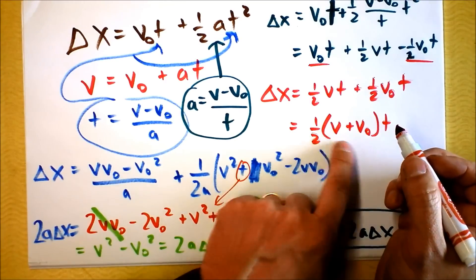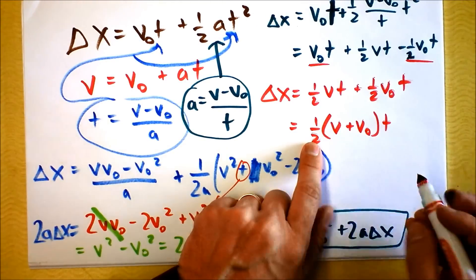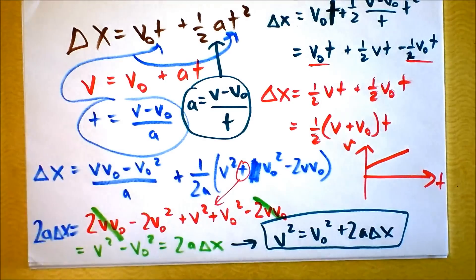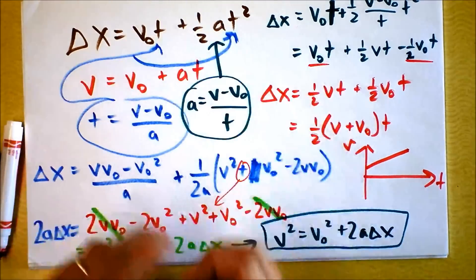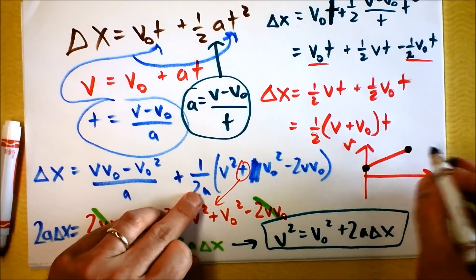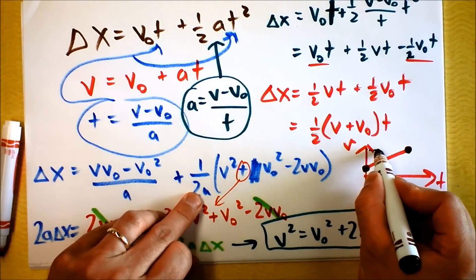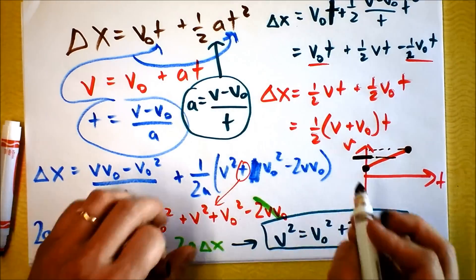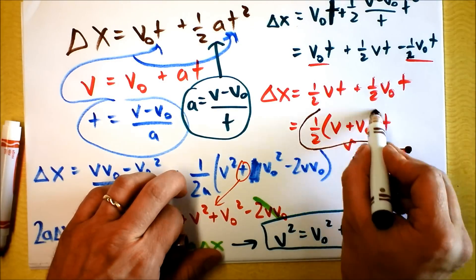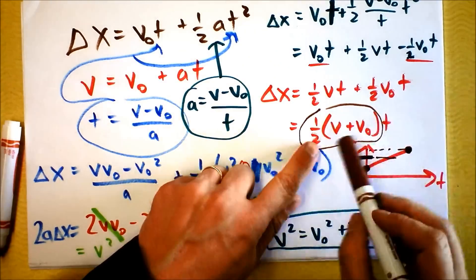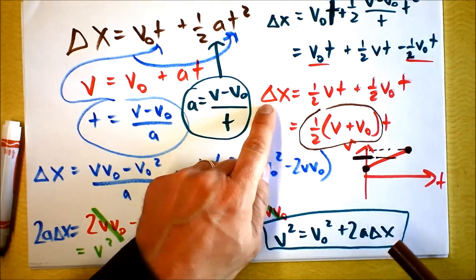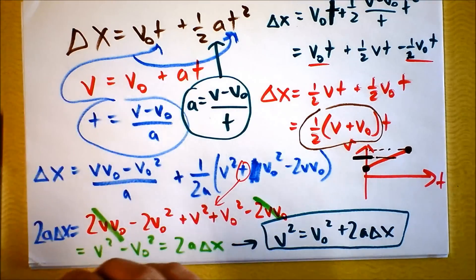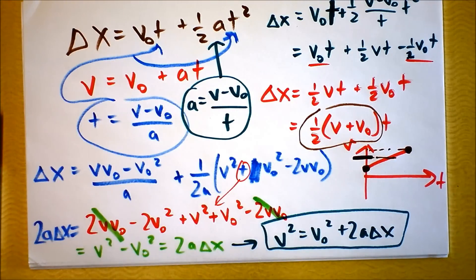This (v plus v-naught) divided by two is actually the average velocity. If I graph velocity as a function of time, and you take your initial velocity and your final velocity — assuming this is a straight line — the average value of your velocity is going to be halfway between the two of them. So this equation says average velocity times time equals displacement. Awesome. So we're going to use those two additional equations to solve problems — for instance, featuring wrappers.